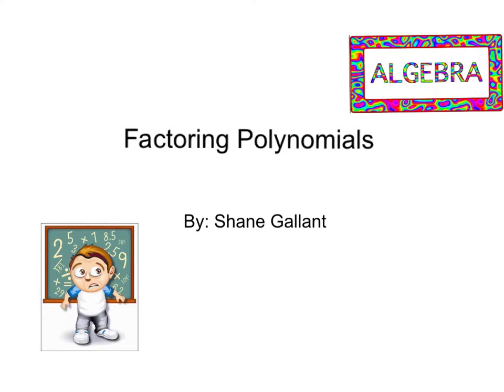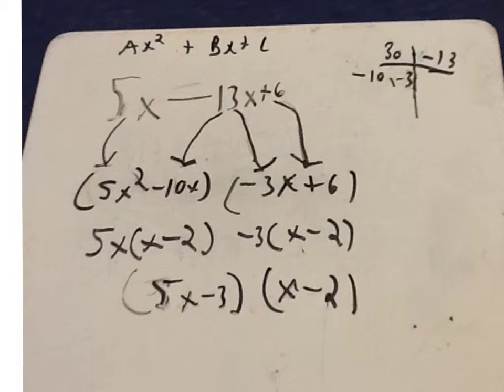Factoring Polynomials by Shane Gallant. My first example is 5x squared minus 13x plus 6. This example is in the format of ax squared plus bx plus c.